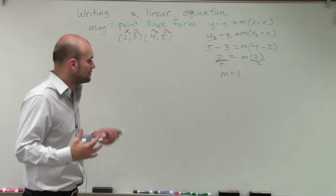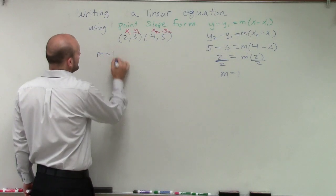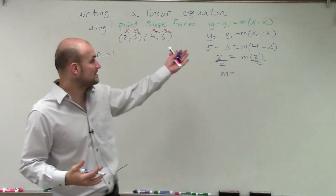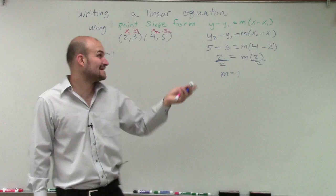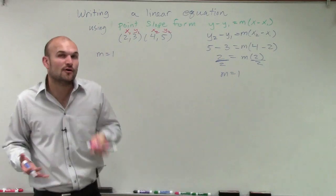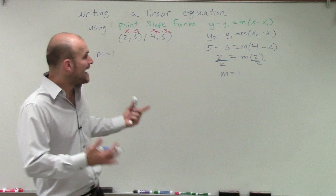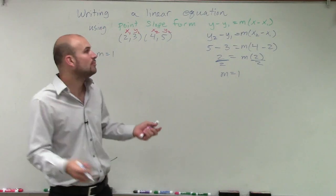Now, to be able to actually write the equation, I now know that m equals 1. And all I need to do by using point-slope form is I just need to pick one of these points. I just need one point. I don't need two of them. The only thing helpful about having the two points is I can determine the slope. But now to write the equation, I only need one point.